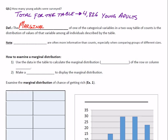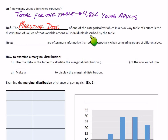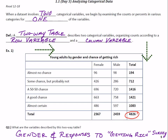The next definition is marginal distribution. It says one of the categorical variables in a two-way table of counts is the distribution of values of that variable among all individuals described by the table. One quick note: it's often better to use percents instead of counts. Percents are often more informative than counts, especially when comparing groups of different sizes.